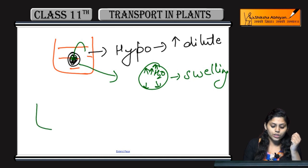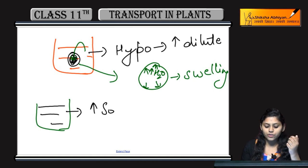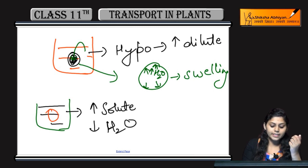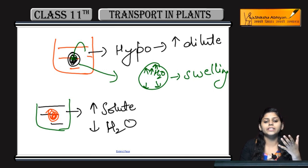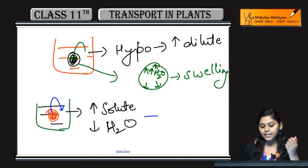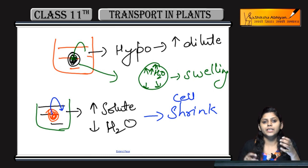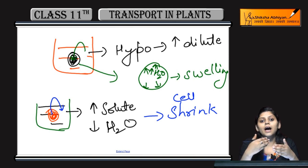Teesri category aati hai — hypertonic solution ki. Container mein solution hai jisme solute ki concentration zhaadha hai, water ki concentration kam hai, yaa phir solvent ki concentration kam hai. Us mein cell place kiya. Cell se comparison mein bahar water kam hoga — cell mein water zhaadha hoga. Toh movement cell se bahar container ki taraf hogi. Iski wajah se cell shrink kar jayega.